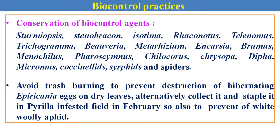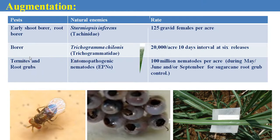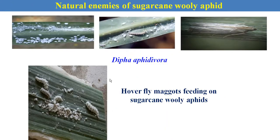For biological control, we can use different predators, parasitoids, and entomopathogenic fungi to reduce the insect pest population of sugarcane. Trichogramma chilonis is an egg parasitoid used against the sugarcane borers. Entomopathogenic fungus is used specifically against termites and white grubs. Epiricania melanoleuca is a lepidopteran parasitoid used as a nymphal parasitoid against sugarcane pyrilla — one of the effective parasitoids. Dipha aphidivora and hoverfly or Micromus igorotus are three different predators used against sugarcane woolly aphids.